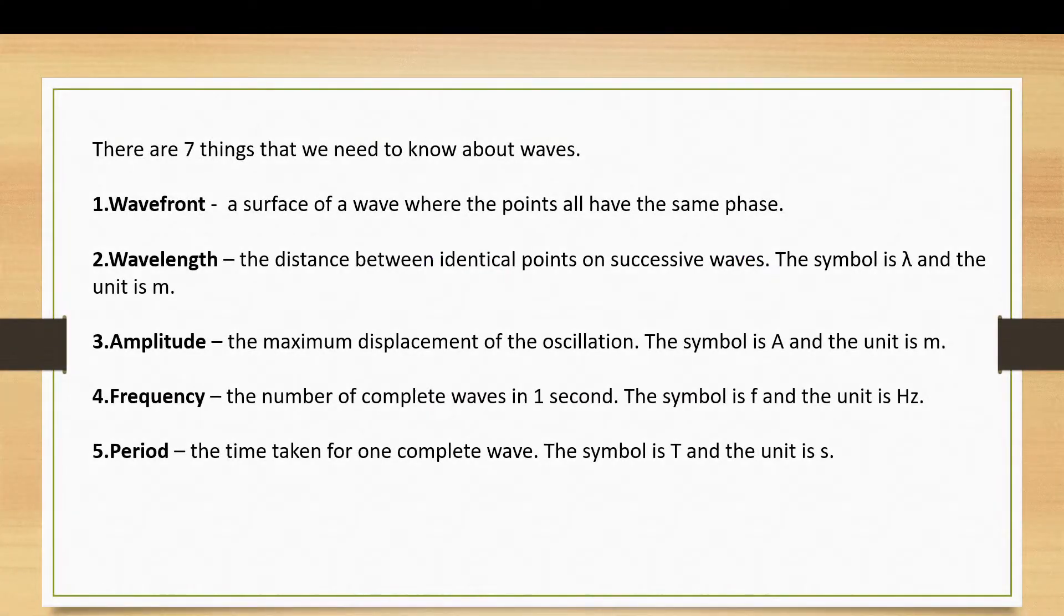Then we have frequency and period. Frequency is the number of complete cycles or waves that you get in one second. So if you have a frequency of 5 hertz, you get 5 waves in one second. The period is the time for one wave, and the frequency is 1 over the period, or the period is 1 over the frequency.